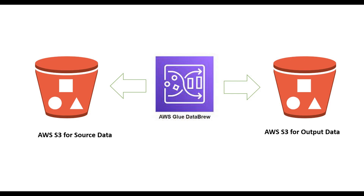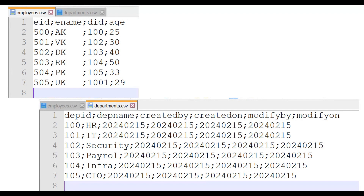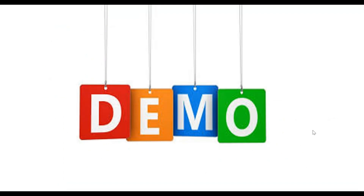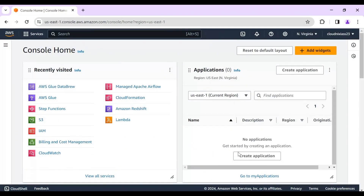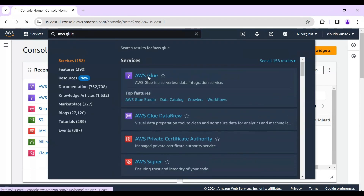Hello and welcome. In this video I'm going to talk about how to use AWS Glue DataBrew for data transformations. We'll analyze an S3 bucket as a source, upload a CSV file, and use an S3 output folder. The source files include employee.csv with fields like EID, name, department ID, and age, and a department CSV with department ID, department name, and more.